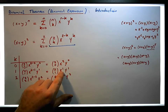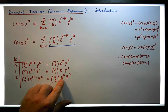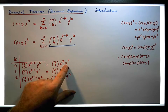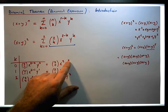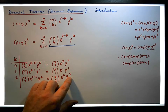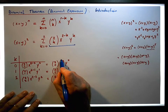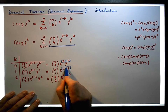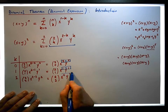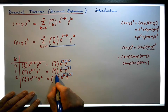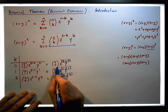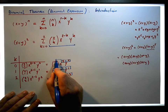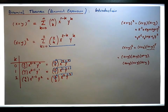The x starts off as a square and then reduces by one each time. The y starts off from zero and increments up by one each time. But the important point is that the sum of both of those values is always the same as this value in the binomial coefficient. And then we could work that out and see what each one of those actually represents.